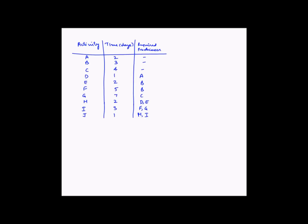Let's draw a network diagram and understand how to identify the critical path. In this example, we have been given activities A through J. For each activity we have the completion time in days and the predecessor activities. Activities A, B, and C need two, three, and four days respectively, and are not dependent on any other activities. Activity D has a duration of one day and is dependent on activity A.